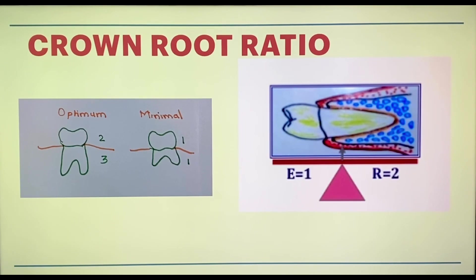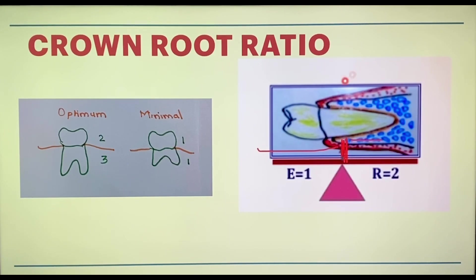We will explain the crown-root ratio with the lever principle. The bone area at the junction of the crown and root is considered the fulcrum; the crown area is the effort arm and the root area is the resistance arm. When there is bone loss, the fulcrum shifts downward, so the effort arm increases and the resistance arm decreases. This means the teeth can be easily moved under force, and the root can be weakened easily. The minimum crown-root ratio is considered 1:1, while the optimum is 2:3. A crown-root ratio of 2:3 is best for fixed partial denture consideration.